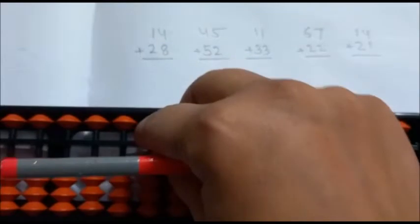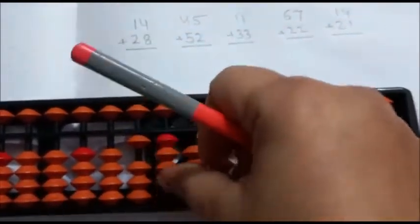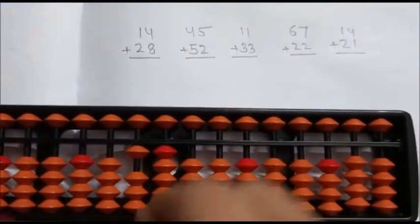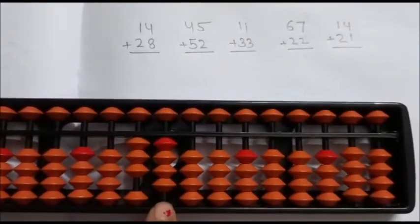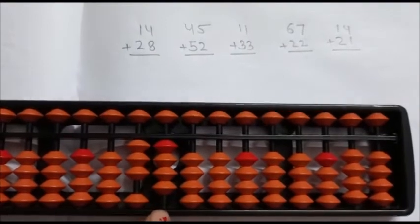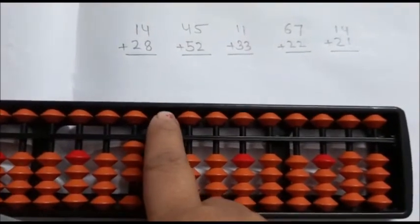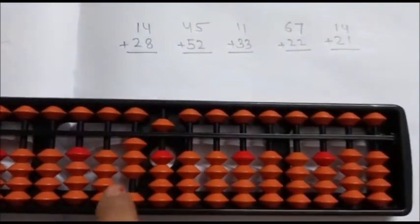Last question is 14 plus 21. 2 is direct. 1. But in the 1's rod, we have no beads. So, we are applying the formula. Formula is plus 5 minus 4. Answer is 35.